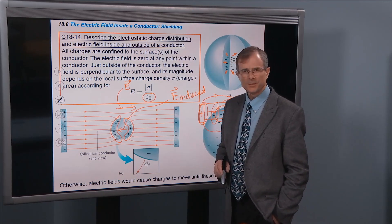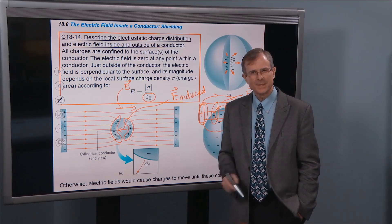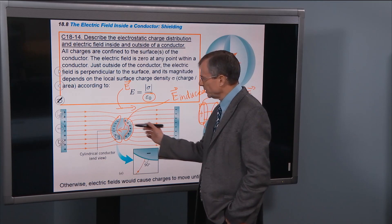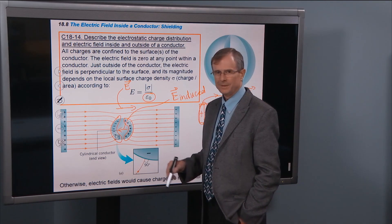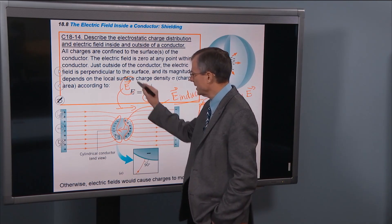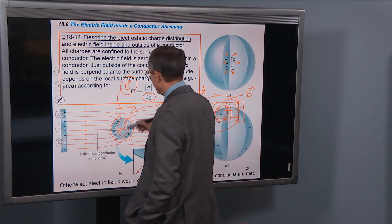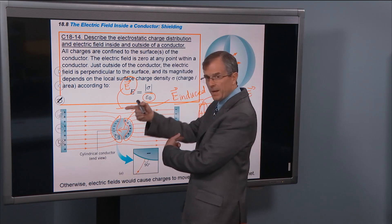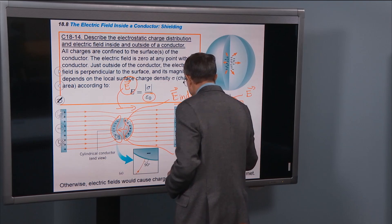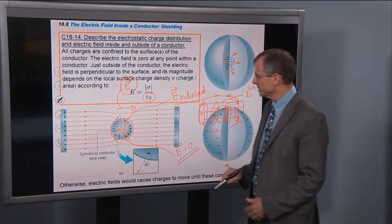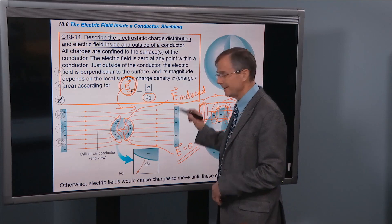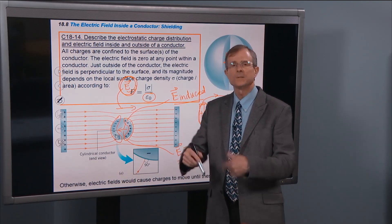How are those two fields related to each other? They exactly cancel each other. The charges will continue to redistribute themselves until the induced electric field in the center cancels out the applied field, leaving a zero electric field inside. If there were still some field remaining that hadn't been canceled by the induced field, the charges would continue to redistribute until they did.